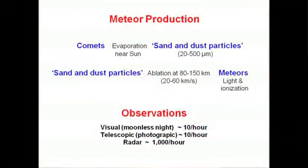First, what are meteors and where do they come from? The commencement really is comets. Comets carry in them little particles — a mixture of dust and sand. They evaporate near the sun, producing these groups of sand and dust particles, moving in the orbit of the original comet. When these particles enter the Earth's atmosphere, a lot of them ablate and burn up, producing a column of light and ionisation, which we call meteors.